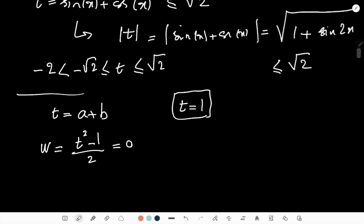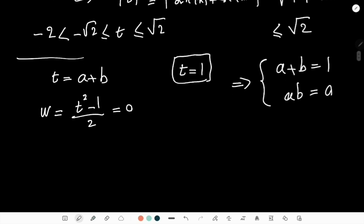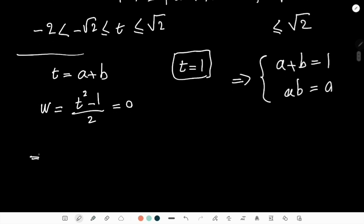So that means we have a + b = 1 and ab = 0. So that leaves us with two situations. Either a = 1, b = 0, or either a = 0, b = 1.